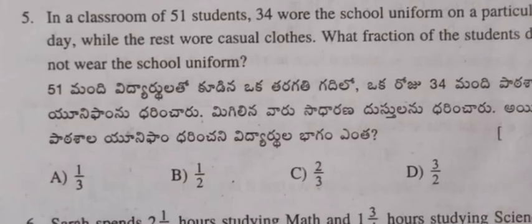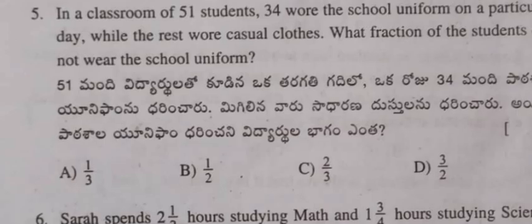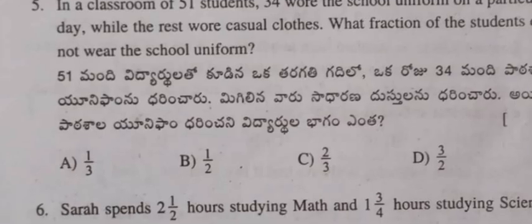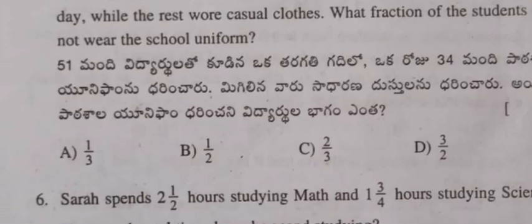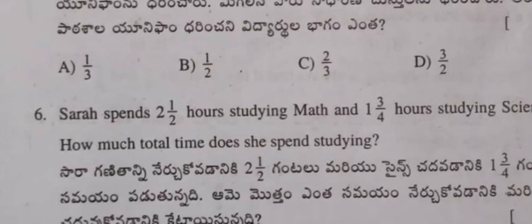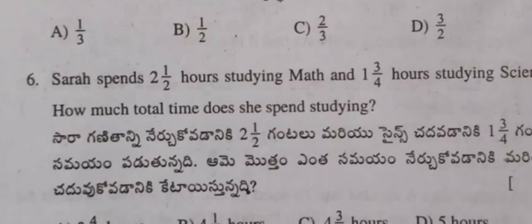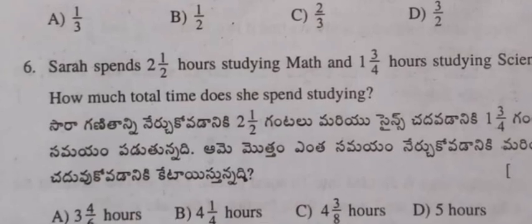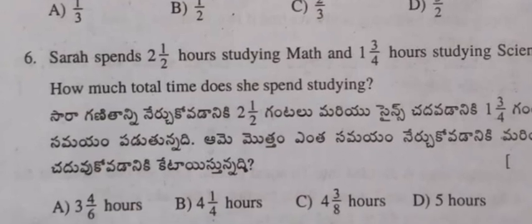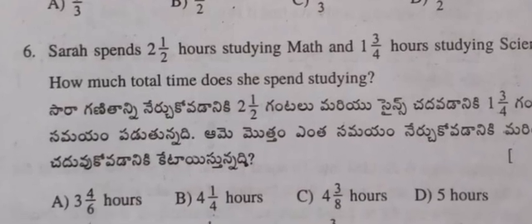Question 5: In a classroom of 51 students, 34 wore the school uniform on a particular day while the rest wore casual clothes. What fraction of the students did not wear the uniform? (A) 1/3, (B) 1/2, (C) 2/3, (D) 3/2.